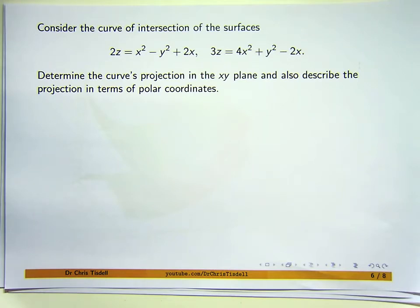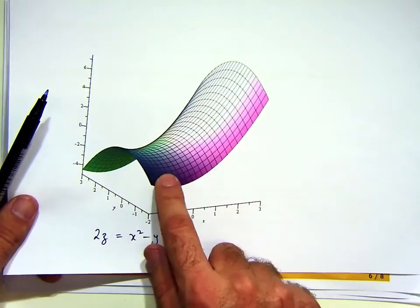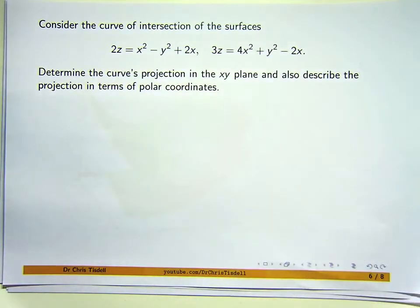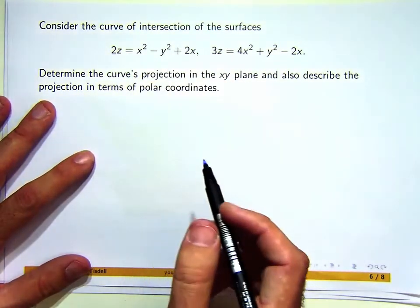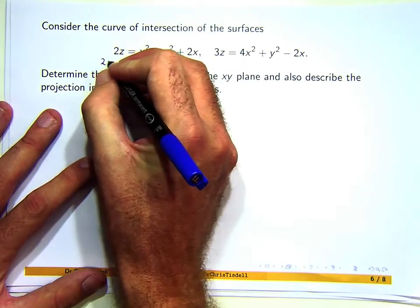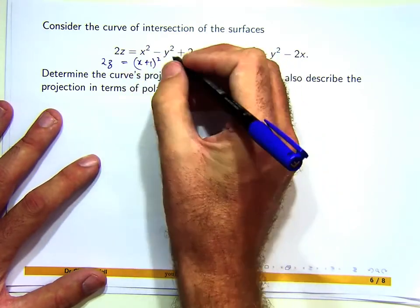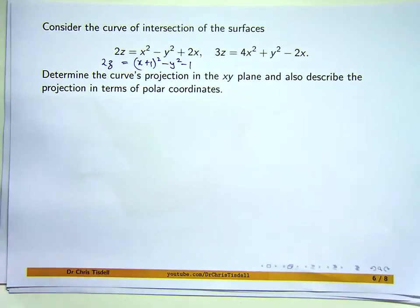When you try to sketch surfaces, one of the best techniques is to use an idea called level curves. You make z equal to a constant and you change the values of that constant and see what sort of curves occur. You can rearrange this to make z the subject. You can actually factorize the x by completing the square.